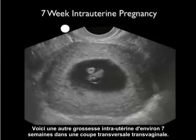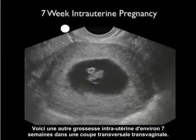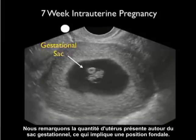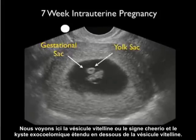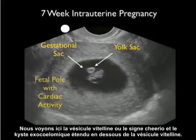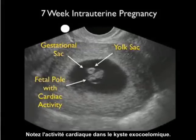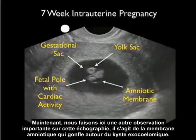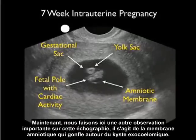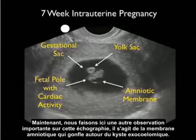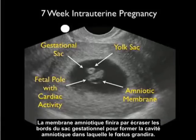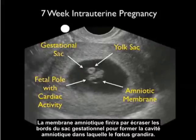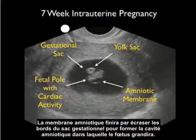Here's another intrauterine pregnancy at about 7 weeks, again in the transvaginal short axis view. We note a good amount of uterus surrounding the gestational sac, signifying fundal location. We see the yolk sac or cheerio sign and the fetal pole stretched out below with positive cardiac activity. We also see another very important finding here: the amniotic membrane billowing out from around the fetal pole, which will eventually plaster down on the margins of the gestational sac to form the amniotic cavity for further fetal growth.